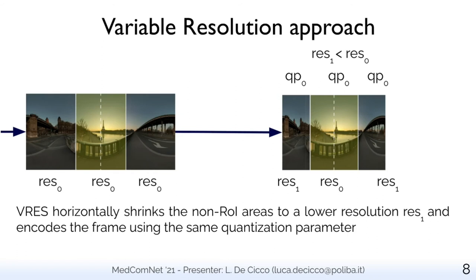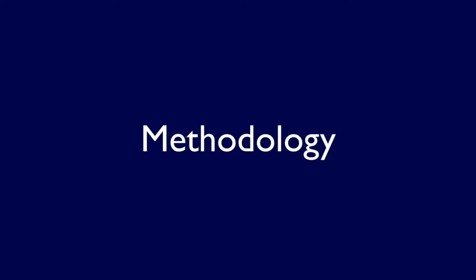The variable resolution approach employs a different strategy to achieve bitrate reduction. With this approach, the non-ROI areas are horizontally shrunk to a lower resolution RES1. The shrunk frames are fed to any encoder and the whole frame is encoded with the same quantization parameter QP0. Before decoding, the two regions outside the ROI must be upscaled again from RES1 to the original resolution RES0. The advantage of the VRES approach is that it does not employ any particular feature of the encoder, making it a viable option for mobile devices not equipped with hardware HEVC decoders.